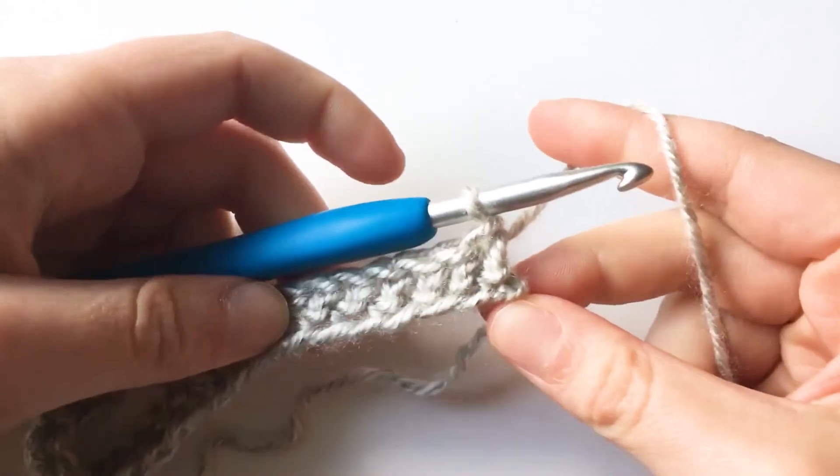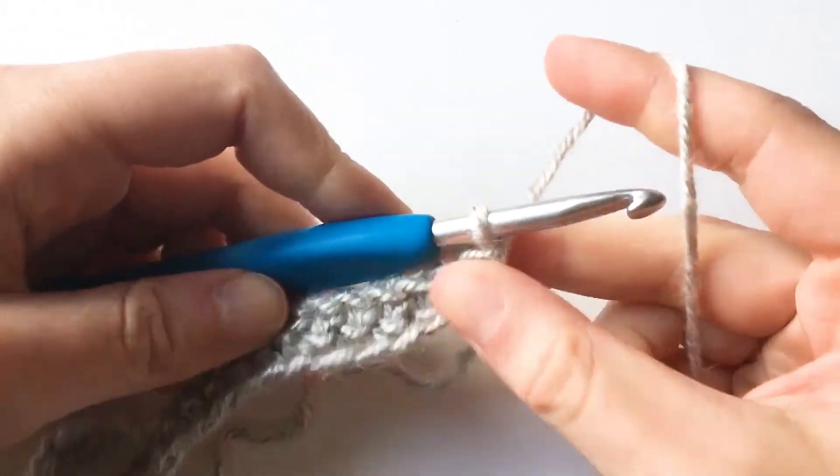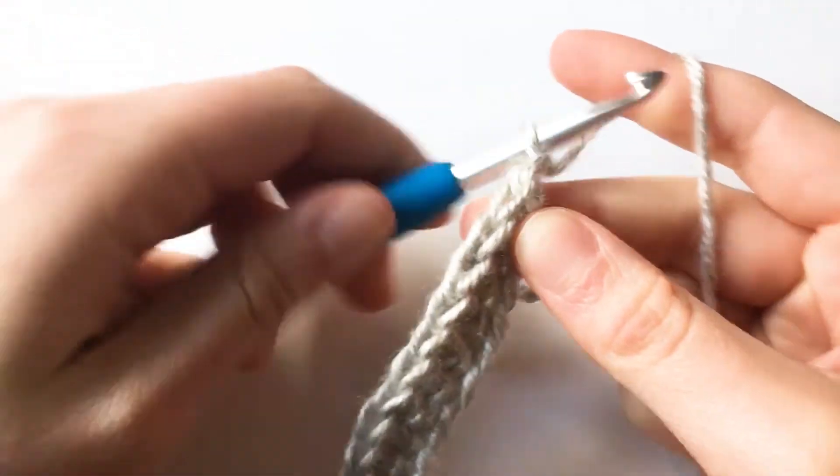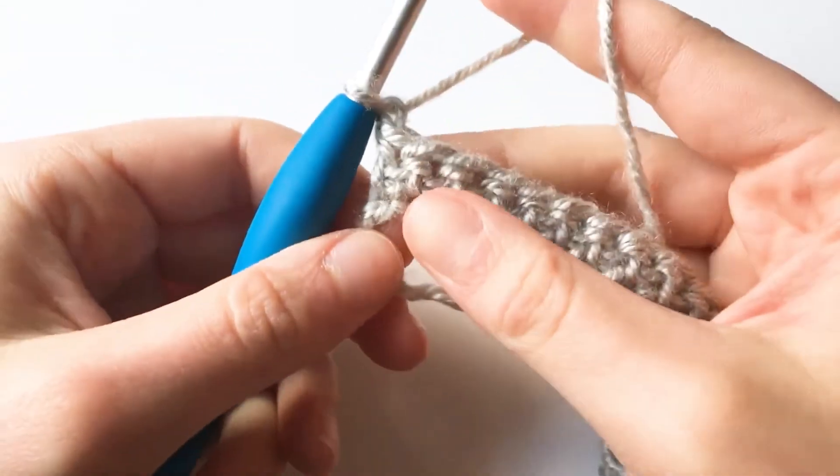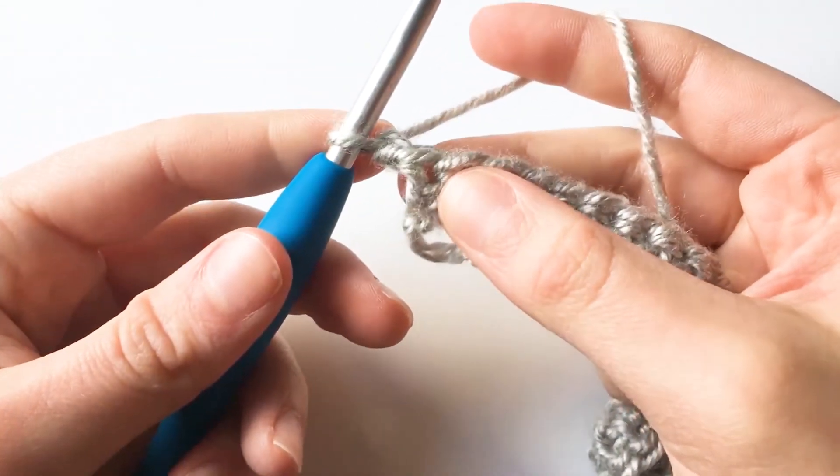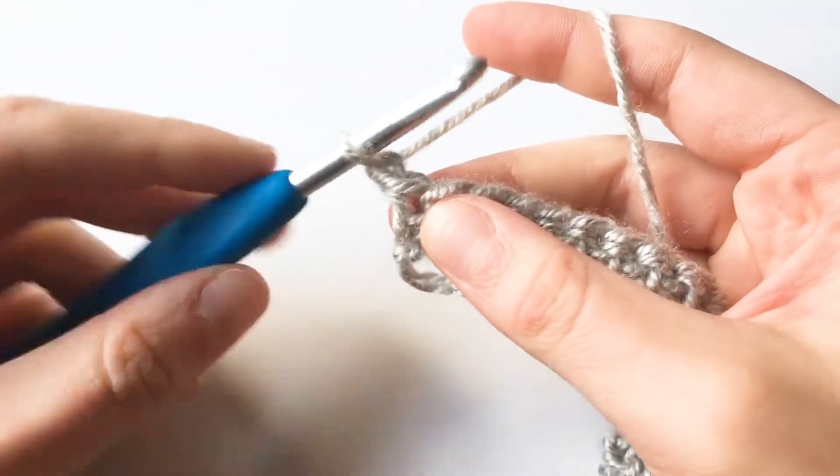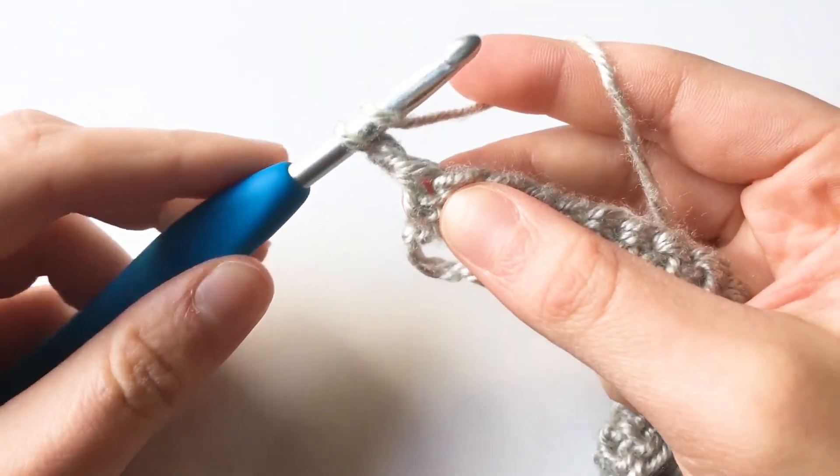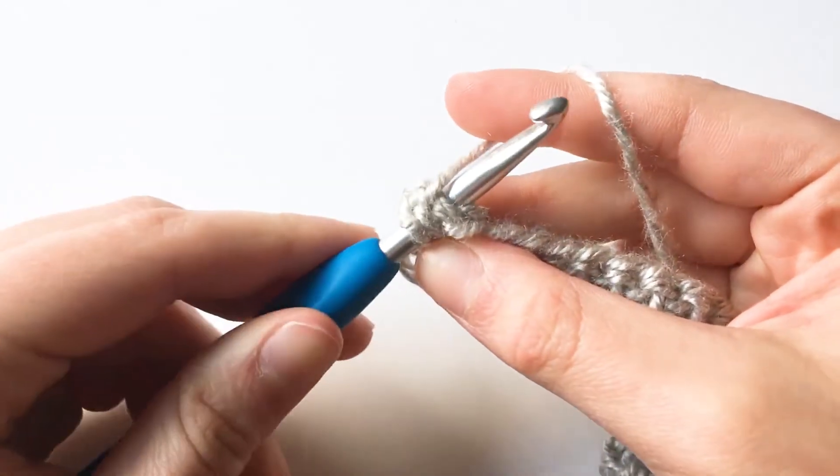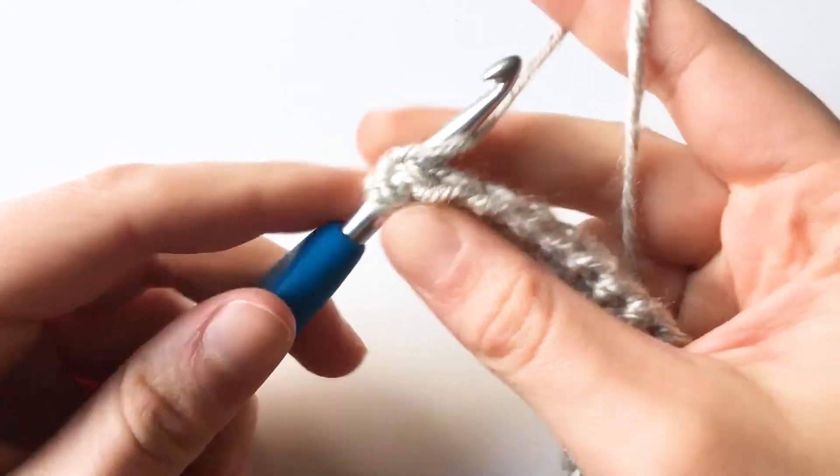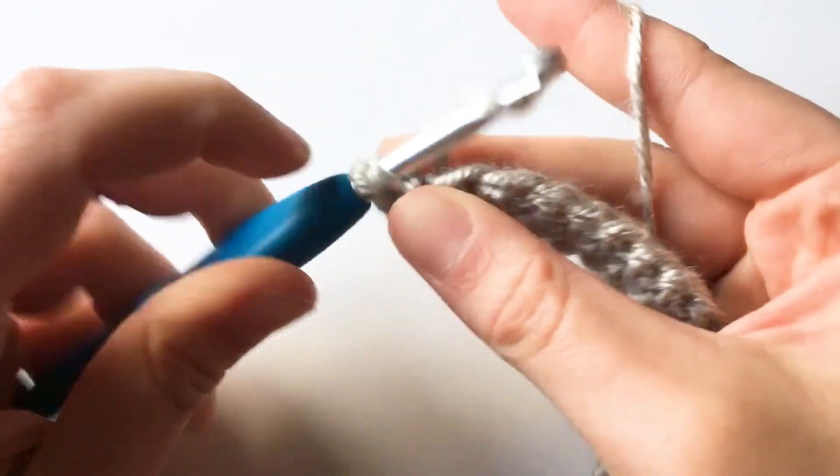I'm at the end of row one, so chain one and then turn. We're going to do the exact same thing as row one for row two. So yarn over, insert your hook into the stitch, yarn over, pull back through and that next loop on your hook, yarn over, pull through the last two loops.